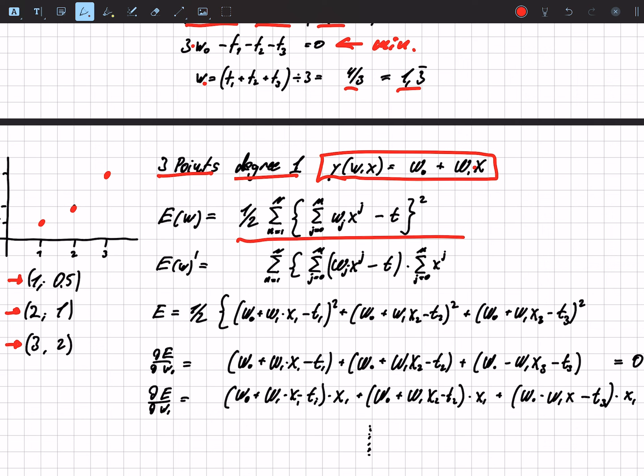So by deriving, we get rid of the one half, we get rid of the power of two, and we have the x that comes from the derivation of the w's here.